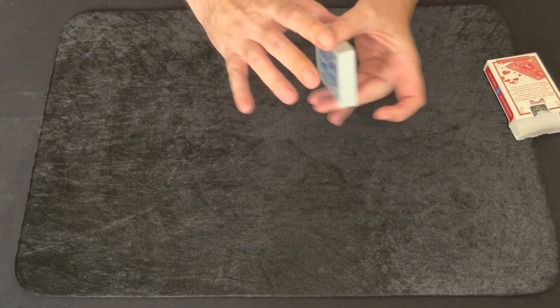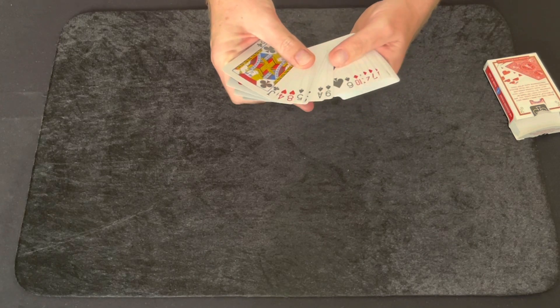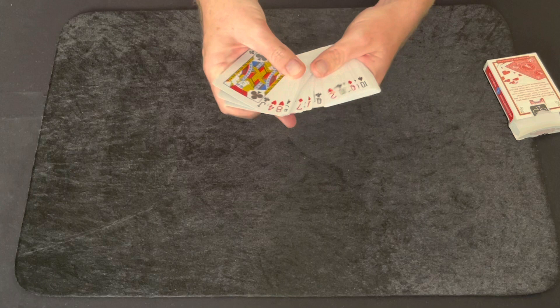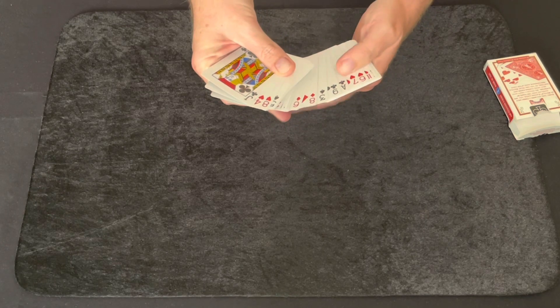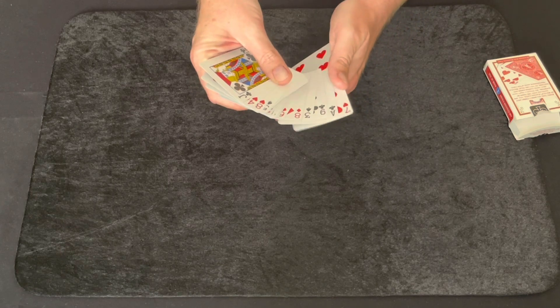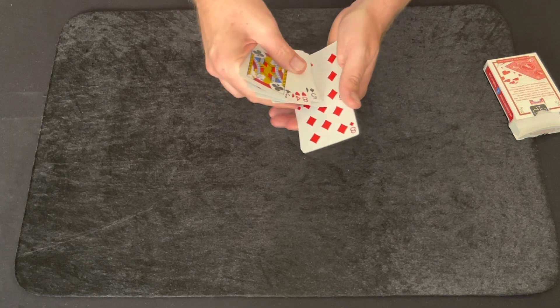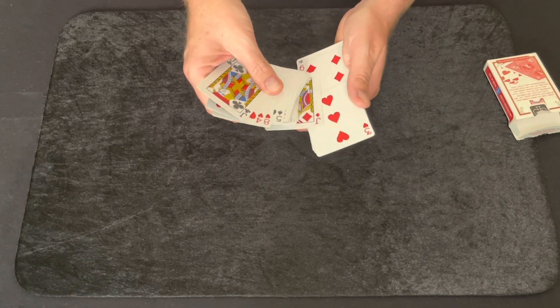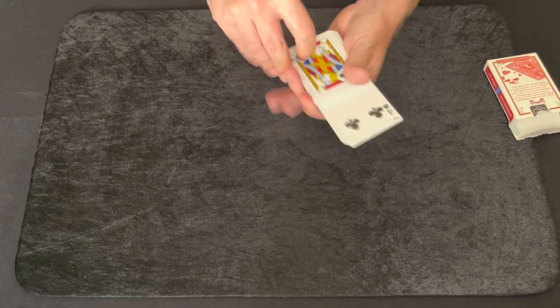Now I do have an idea of what their card is but I'm going to use the process of elimination in this trick and I have an idea that it could be one of five cards. So I'm just going to out jog one, two, three, let's see, four, five cards.